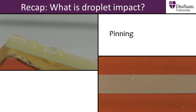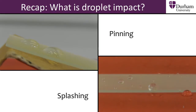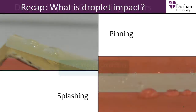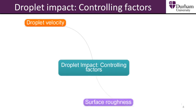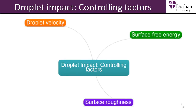In this section we will see examples of how droplet impact is controlled to give the desired impact. Droplet impact has a number of controlling factors including drop velocity, surface roughness, and surface free energy.